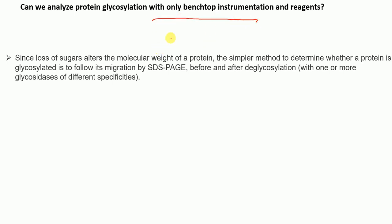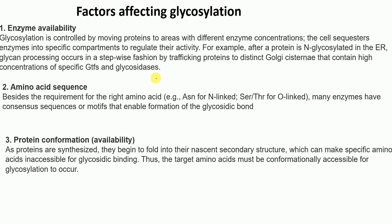Can we analyze glycosylation with only bench-top instruments? Yes — since loss of sugars alters the molecular weight of a protein, a simple method is to follow its migration by SDS-PAGE before and after deglycosylation using one or more glycosidases of different specificity.